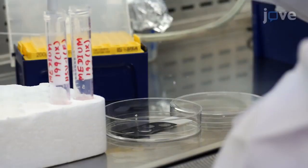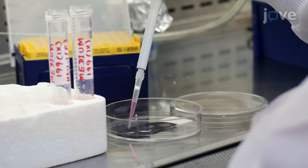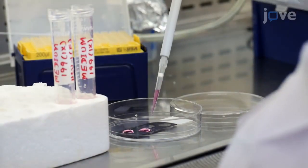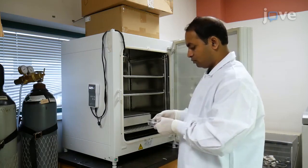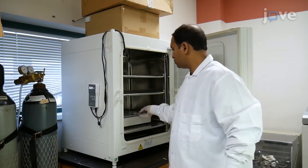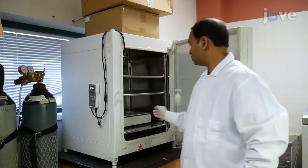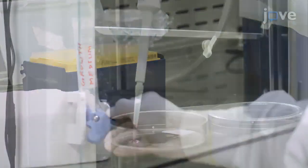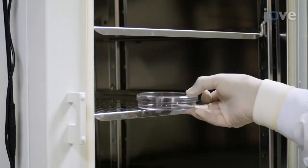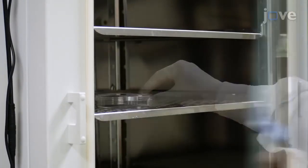The next day, replace the supernatants of the 70 to 80% confluent cultures with medium 199 containing 4 to 10 plaque forming units per cell and place the slide at 37 degrees Celsius with shaking for 1 hour. At the end of the incubation, replace the supernatants with fresh growth medium and return the cells to the incubator for the appropriate experimental infection period.